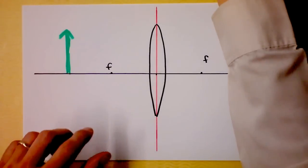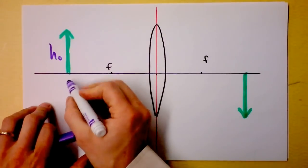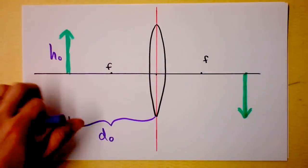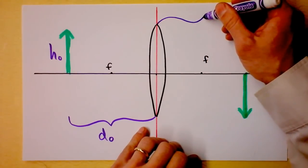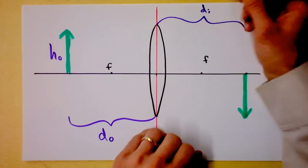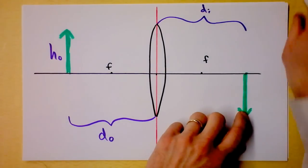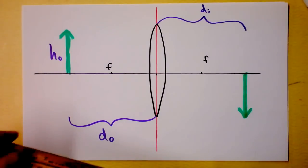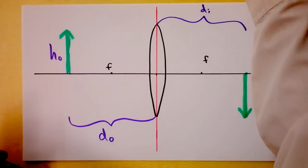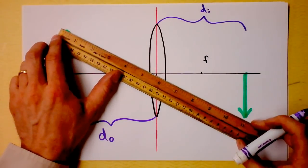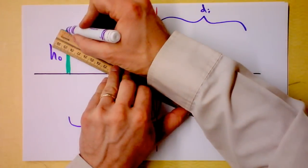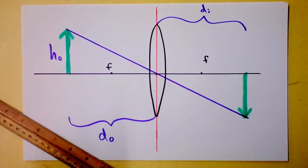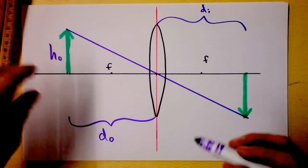Here's the object, and this is the height of the object. I'll call this the distance of the object, and the distance of the image is probably going to be over here. Because of the symmetry of this problem — kind of the twice-the-focal-length beautiful thing — I've already drawn where the image is going to be. I'll start with the m-ray, my favorite ray: it goes straight through the center and hits the top of the image.